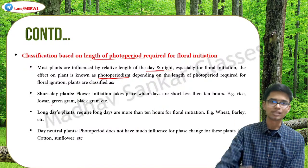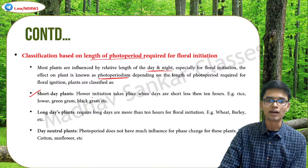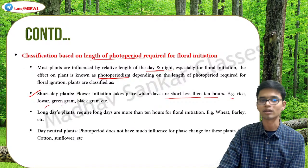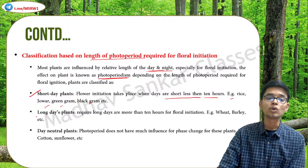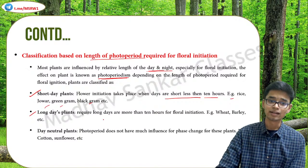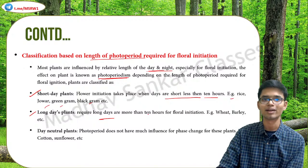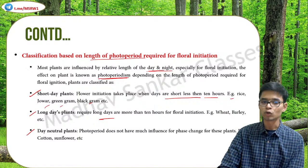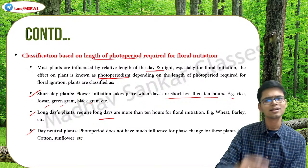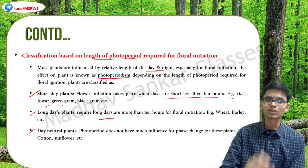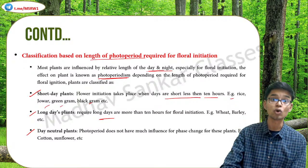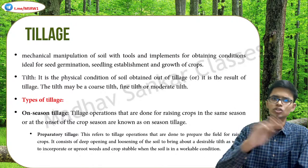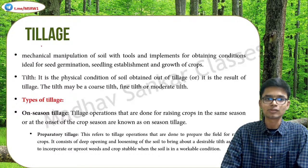Based on photoperiodism, crops are divided into short-day plants — where flower initiation takes place when days are short, less than 10 hours — examples include rice, jowar, green gram, and black gram. Long-day plants require longer days of more than 10 hours for floral initiation. These are the classifications based on the length of photoperiod. That covers the different kinds of crop classifications based on several factors.